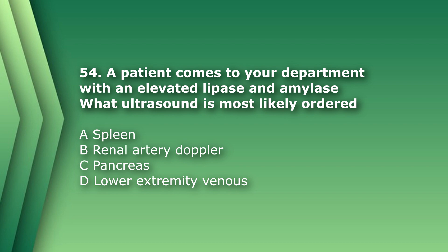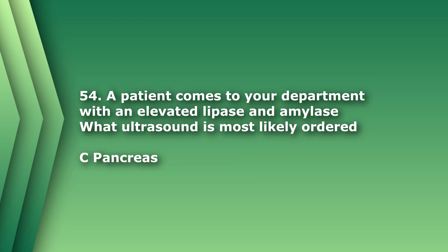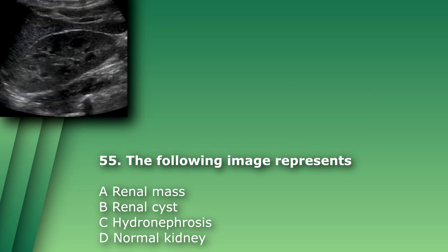Question 54: A patient comes to your department with elevated lipase and amylase — what ultrasound is most likely ordered? A) spleen, B) renal artery Doppler, C) pancreas, D) lower extremity venous. The answer is C, pancreas. Elevated lipase and amylase are indicative of pancreatitis.